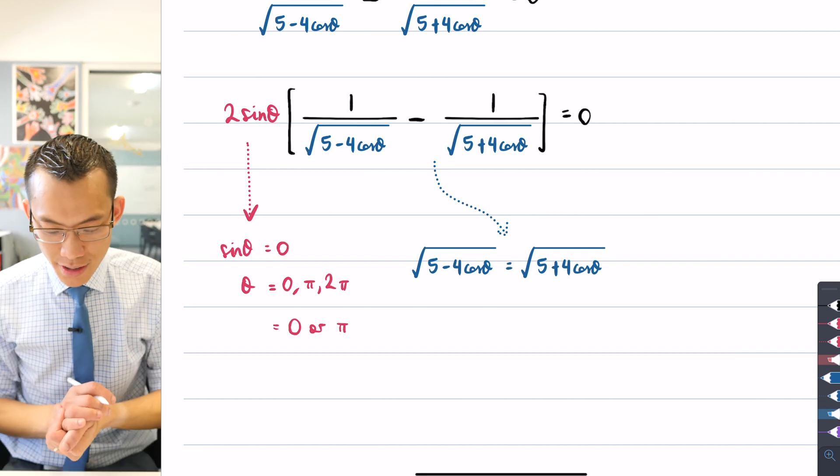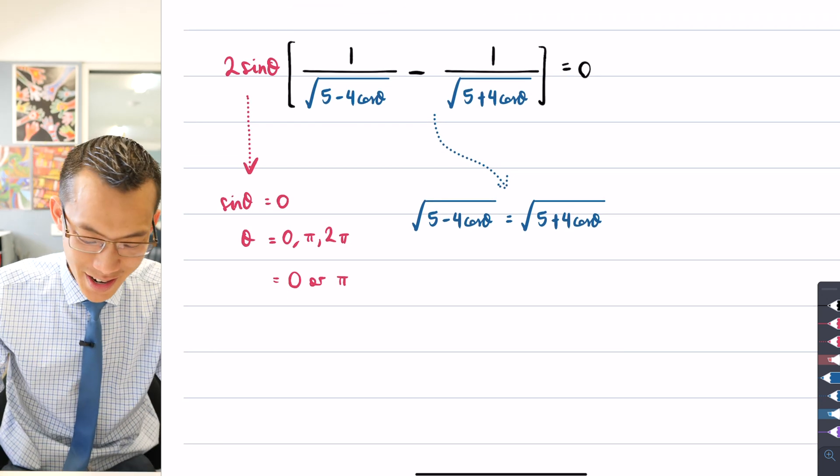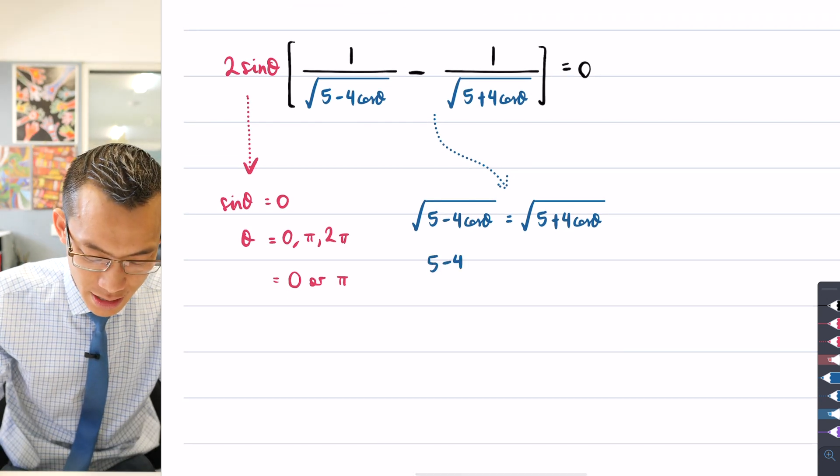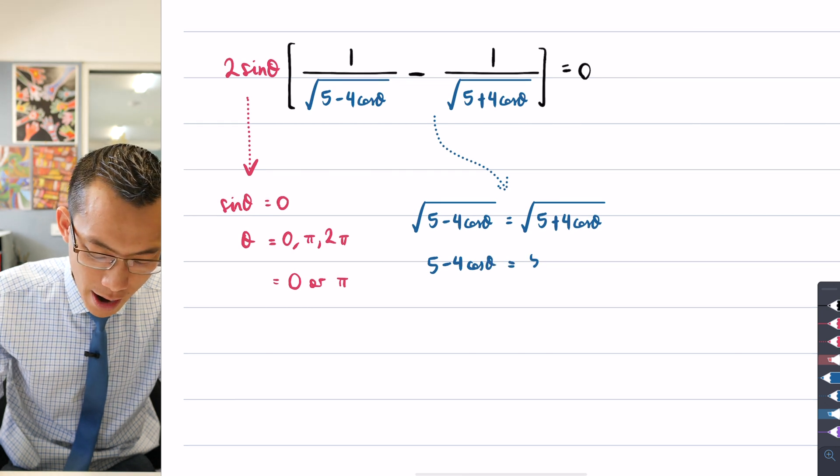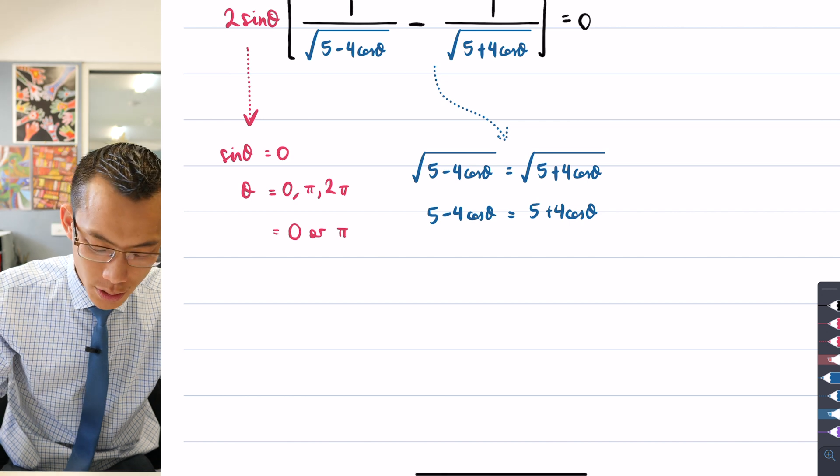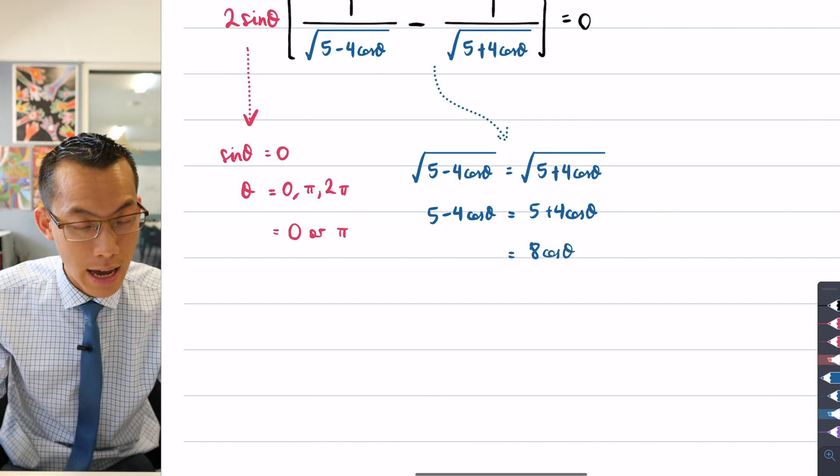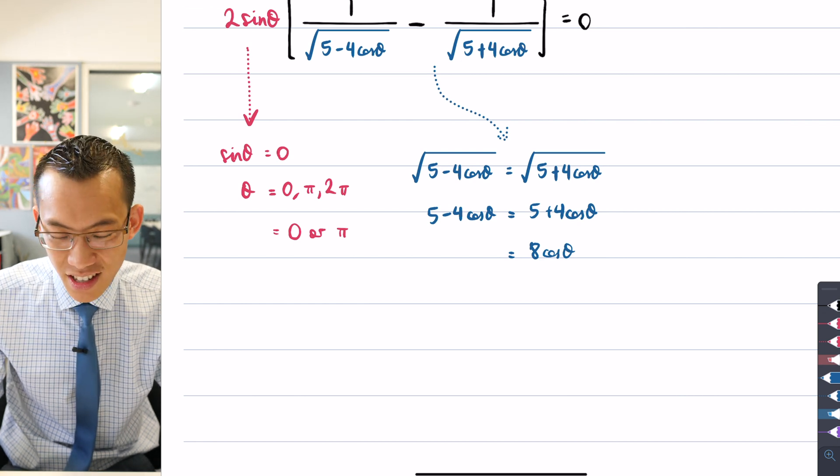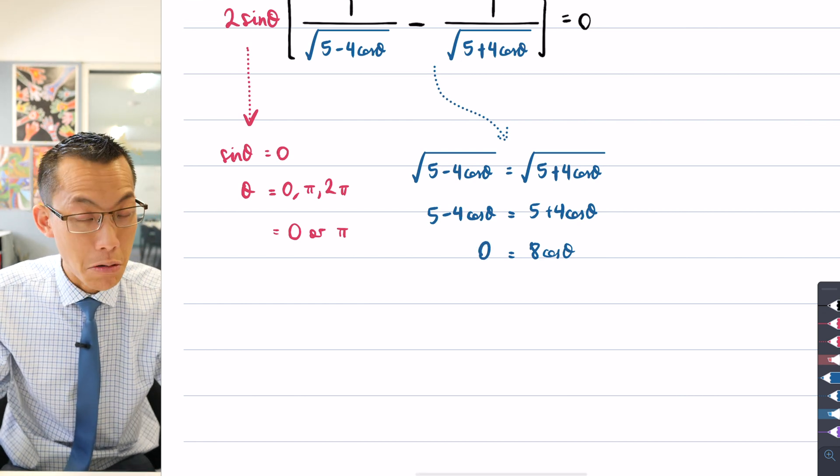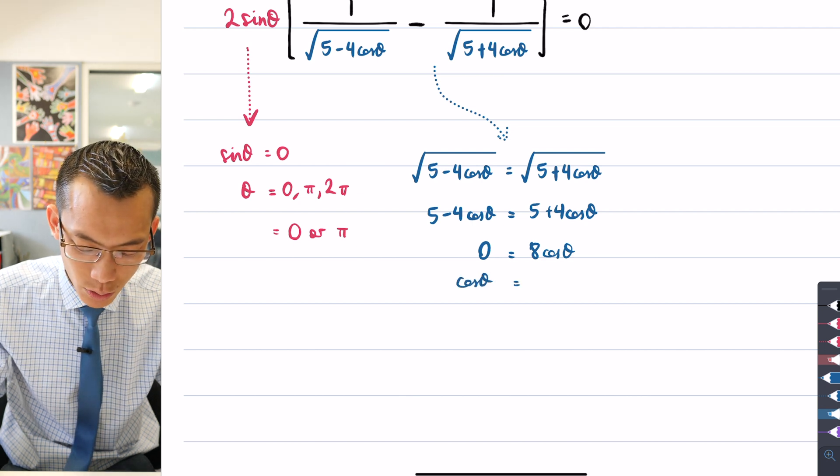The first thing I notice is that the square roots of two things will be equal if the two things underneath the square roots are equal. So therefore I can just say 5 - 4cosθ = 5 + 4cosθ. I can add 4cosθ to both sides, which would give me 8cosθ over here on the right hand side and no cosθ on the left. And then I can subtract five from both sides, which gives me zero.